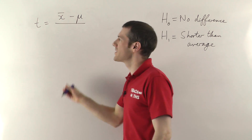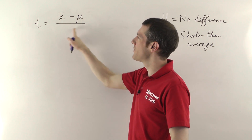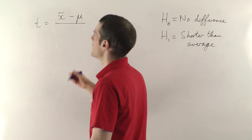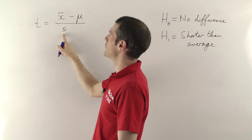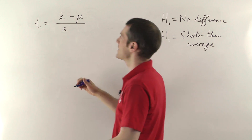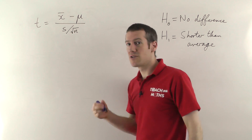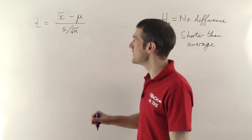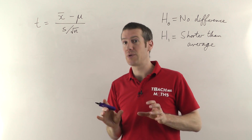The t-value in general is the difference between the means divided by the variance — the variance of the samples. In this case it's s, the standard deviation of your particular team, divided by the square root of n, which is the number of data points in your sample — in this case the number of basketball players on your team. That's the t-statistic for a one-sample test.